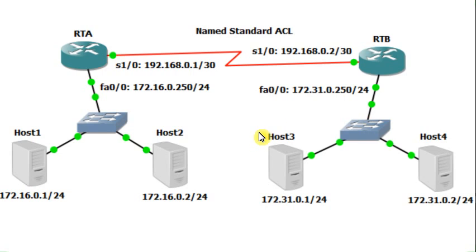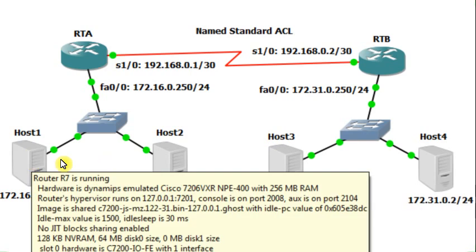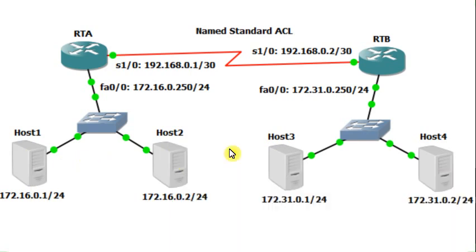If I want to permit traffic from host 3 to host 1 and host 2, I can do it. I can also deny traffic from host 4 to host 1 and host 2. Where I'm going to configure this named standard access list, it should be closer to the destination network, so it will be configured on RTA. Let's see how to configure that.